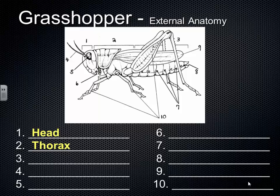The thorax also has many of the digestive organs. All insects have head, thorax, and then the abdomen. That final section, the abdomen, contains the reproductive organs and part of the respiratory system. So those are the three body sections.